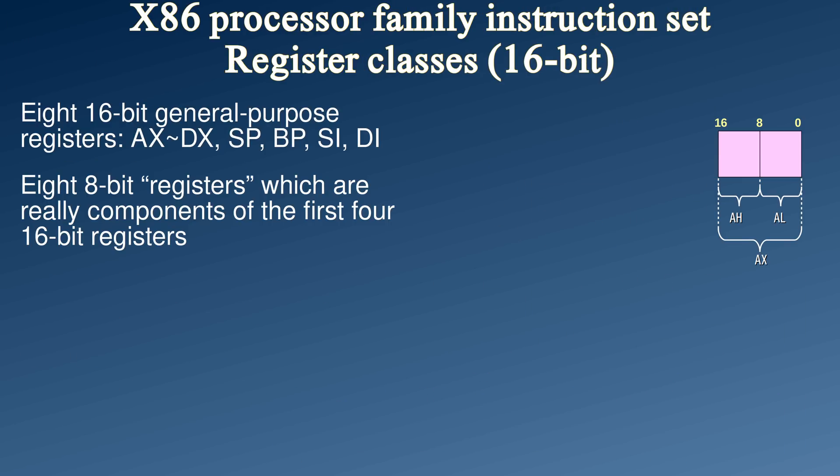Anyway, the first four base registers were 16-bit wide, but their lower and higher 8-bit halves could be accessed individually — because why not? All preceding Intel processors had a similar feature, and it had often proven to be very useful in programming.